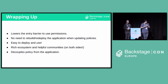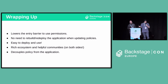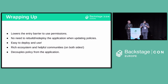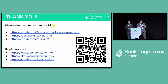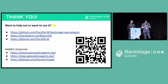To wrap up: the idea is to lower the barrier to use permissions, hopefully making it easier for people. There's a lot of work going on in Backstage to lower that barrier for onboarding. No need to rebuild or redeploy the application when you update policies — you can do them on the fly. It should be easy to deploy and use. Both sides have amazing communities and rich ecosystems, so you won't get stuck on either side. You can ping me directly on Discord if you want to use this. The goal is to decouple policy from the application. The repository is available if you want to look at it, along with some helpful OPA resources to get you going.